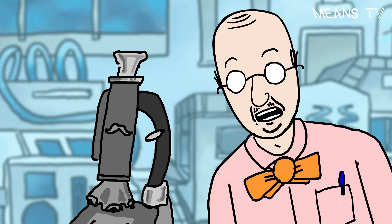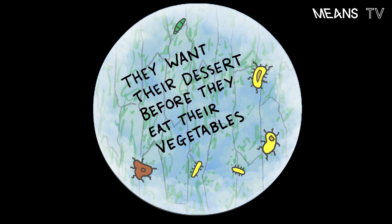We could say that the traumatic kernel at the center of both the boy and the criminal mind is that they want their dessert before they eat their vegetables.